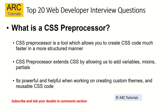What is a CSS preprocessor? A CSS preprocessor is a tool that allows us to create CSS code much faster in a more structured manner. It extends CSS by allowing us to add variables, mixins, partials, etc., making it very powerful for custom theming and reusable code. For example, in Bootstrap we use Sass to define a primary color variable — change it in one place and it updates everywhere automatically.